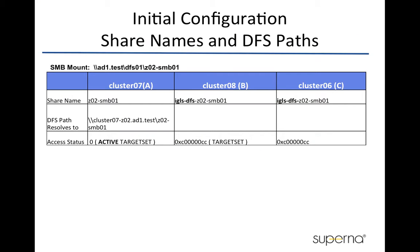This table shows the initial configuration for SMB share names and DFS path for cluster 07, 08, and 06. The share name for cluster 07 is set to use the actual share name. But for cluster 08 and cluster 06, once DFS mode is configured and enabled in Eyeglass, the share names are renamed to the igls-dfs prefix. The DFS path resolves to cluster 07, which is the active path.